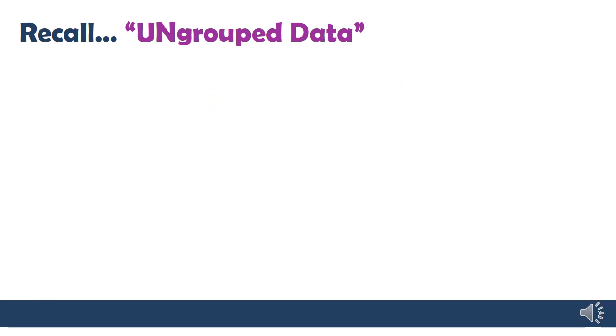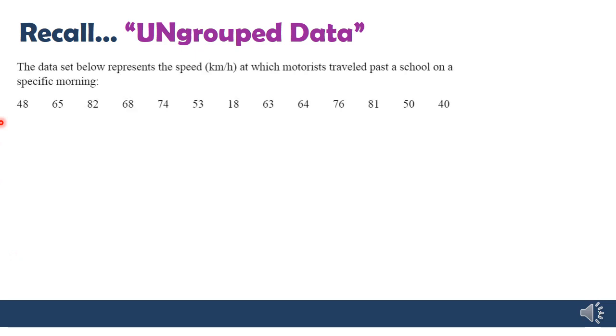To understand what grouped data is we have to first remember what ungrouped data is. So for the last few lessons we've been following this example about motorists going past a school gate. And this is an example of ungrouped data. We haven't put any of these values into different intervals. We haven't grouped, let's say, 40 and 48 together in an interval. We have put them in ascending order so we've organized the data but we haven't grouped it. So there's a distinction there.